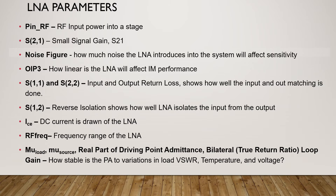These are LNA parameters simulated using Keysight ADS. PNRF is the input power into the LNA. S21 is LNA small signal gain. Noise figure is a measure of how much noise the LNA introduces into the system — it affects the sensitivity. Output IP3 is a measure of how linear the LNA is and affects IM performance. S11 and S22 are the input and output return loss, showing how well the input and output matching is done. S12 is reverse isolation, showing how well the LNA isolates the input from the output.